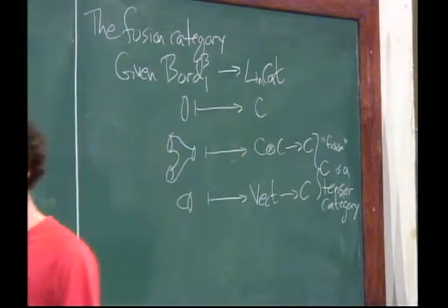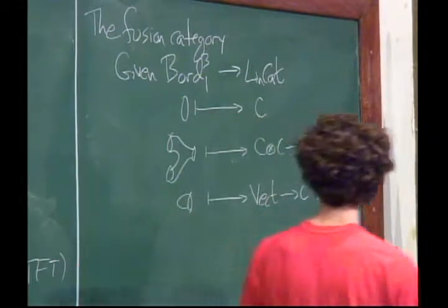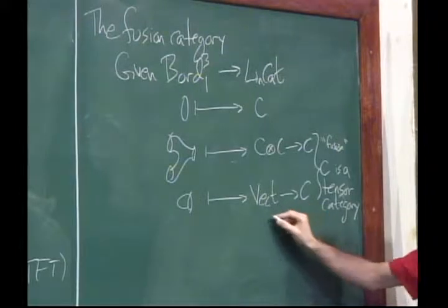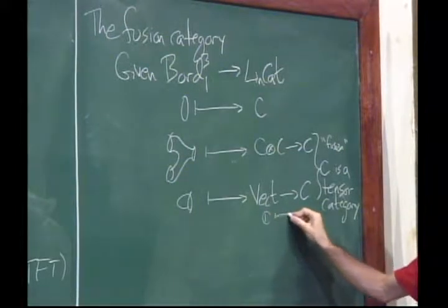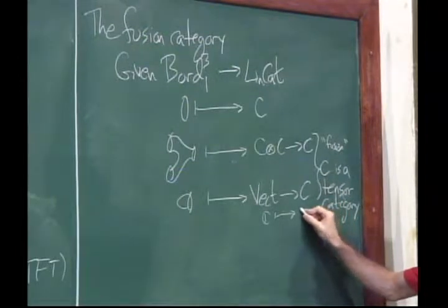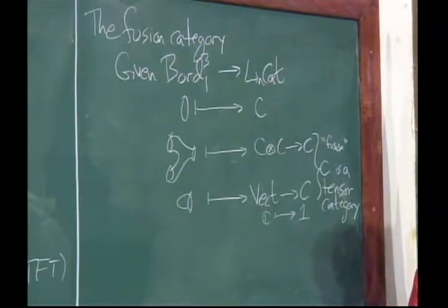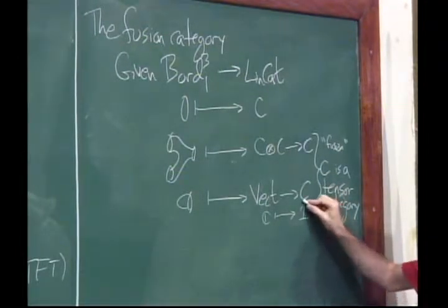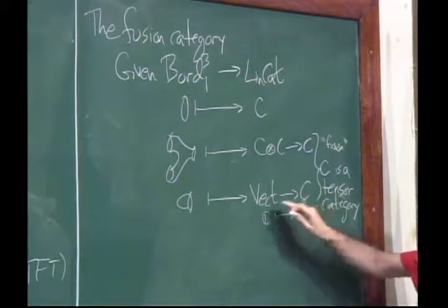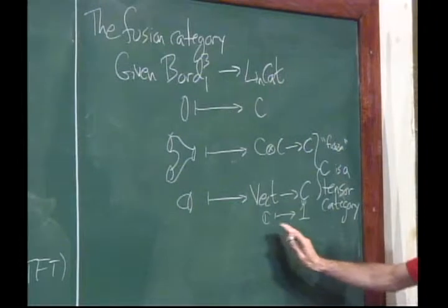I'll use the words tensor and monoidal more or less interchangeably: tensor tends to connote that the underlying category is linear, whereas monoidal doesn't implicitly have that assumption. C is a linear category, so I have C and a monoidal structure, and I refer to the whole thing as a tensor category. I really want to have the unit as well — a functor from Vect into C that behaves like a unit with respect to this product. The unit object is denoted 1, the object of C that is the image of C under that functor.